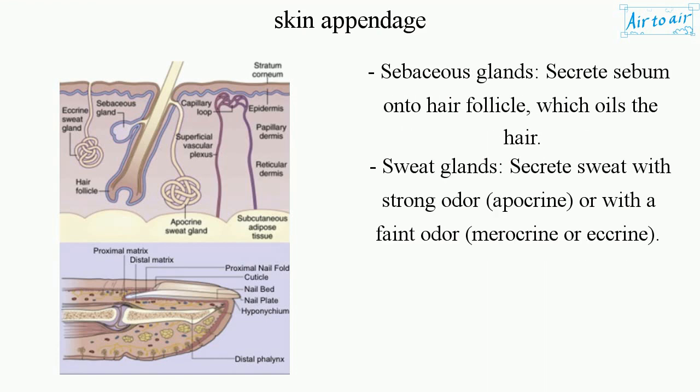Sebaceous glands secrete sebum out of the hair follicle, which oils the hair. Sweat glands secrete sweat with a strong odor (apocrine) or with a faint odor (merocrine or eccrine).